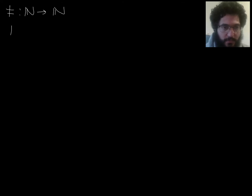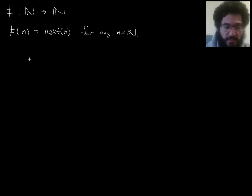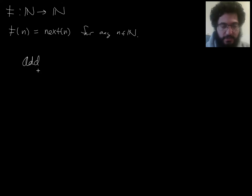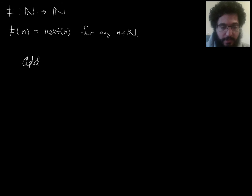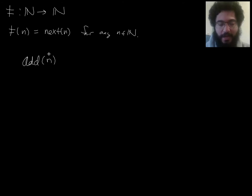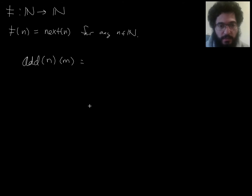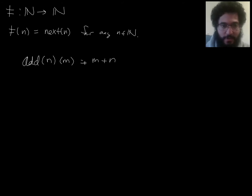Recall that we defined a function last time from N to N which has the effect of taking the next of any natural number you give it. Our goal now is to define a function I'm going to call 'fancy add'. Think of this as one symbol for a constant. When you give it a natural number n, it outputs another function, and when you give that function a natural number m, it gives you m plus n — though I haven't defined plus yet, but this is what I want.